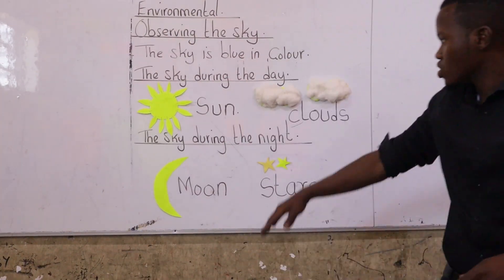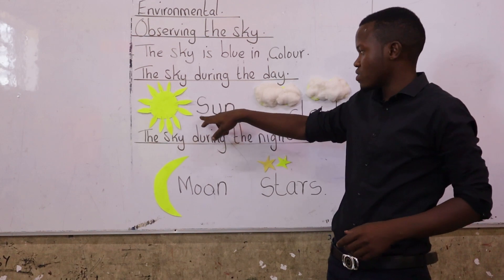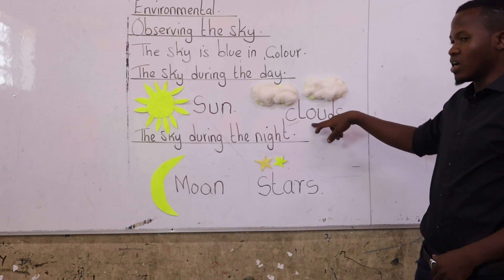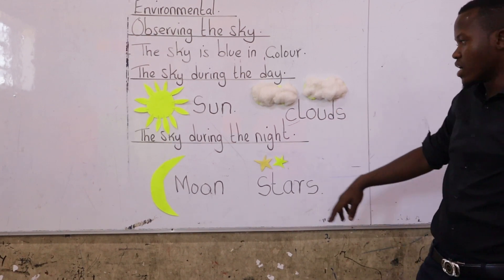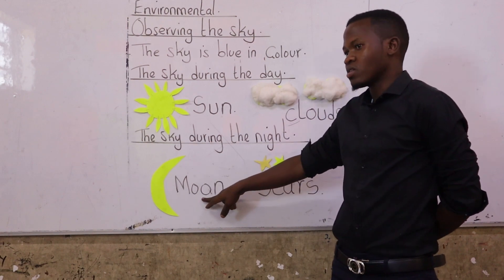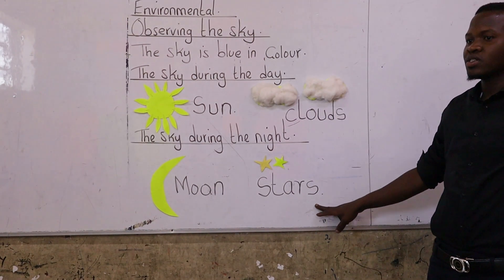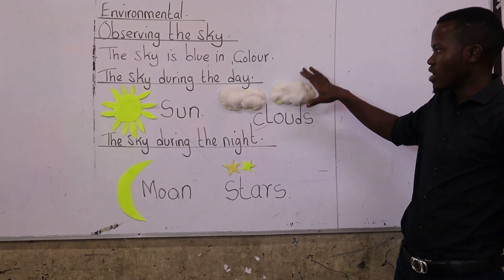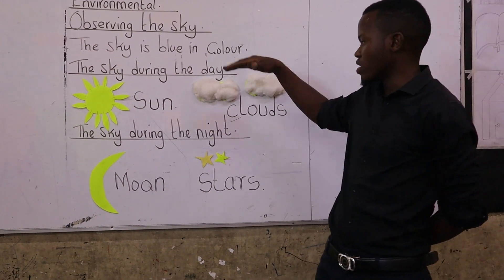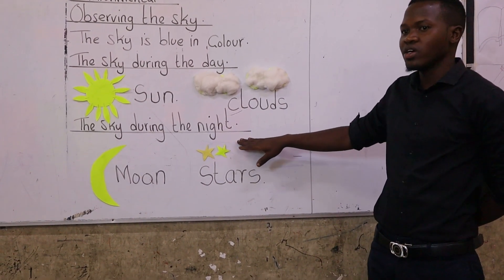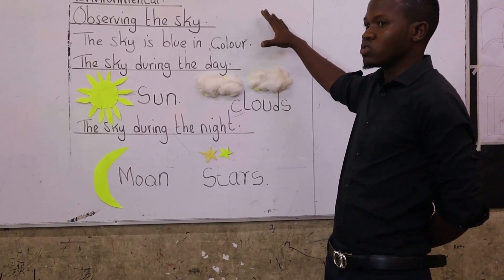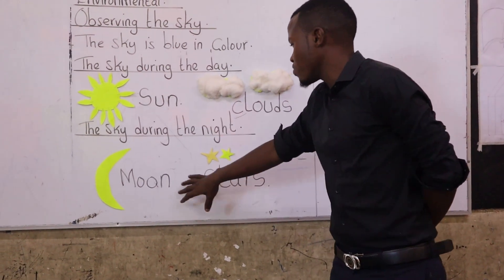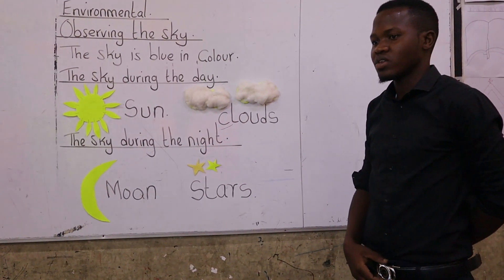Now let us read it together. So during the day, what can be seen in the sky? We have the sun and the clouds. During the night, what can be seen? We have the moon and the stars. So these are the things that are found in the sky at different times — during the day and during the night. In your book, I want you to draw the sun, the moon, the star, and the clouds all together.